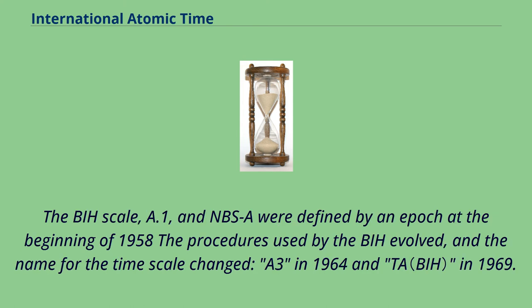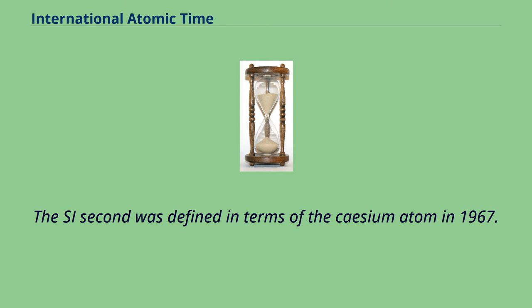The BIH scale, A.1, and NBS-A were defined by an epoch at the beginning of 1958. The procedures used by the BIH evolved, and the name for the timescale changed: A3 in 1964 and TA in 1969. The SI second was defined in terms of the cesium atom in 1967.